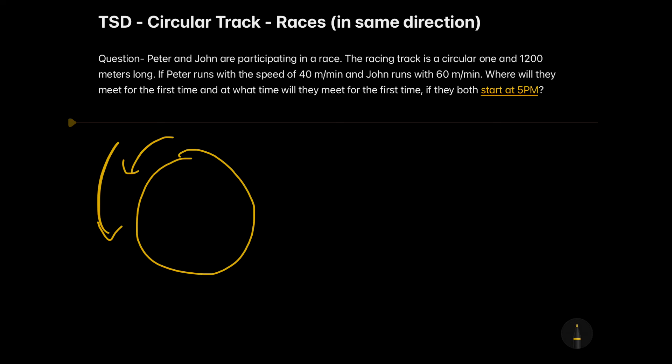So when the distance is given as 1200 meters that means one lap of the race, when we cover one lap, that one lap equals 1200 meters. And if Peter runs with a speed of 40 meters per minute and John runs with 60 meters per minute, then we would be first finding out where will they be meeting at the first time and second question is at what time will they meet for the first time if both of them are starting at 5 pm.